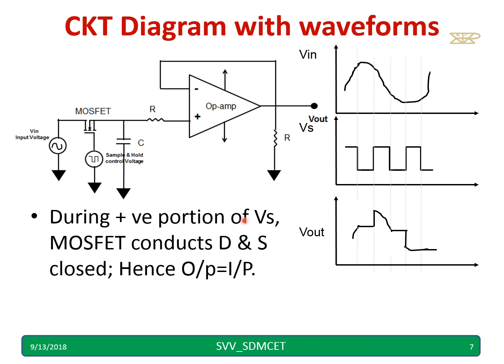During positive portion of Vs, MOSFET conducts and drain to source are short circuited. Hence this voltage whatever I am getting is equal to this voltage. This is basically a voltage follower and voltage follower simply output will be equal to input. Hence whatever output equals input you are going to observe during whenever this is positive. Whenever it is positive, output follows the input.